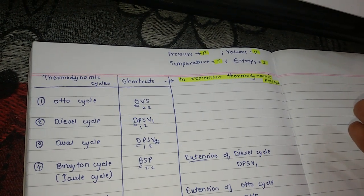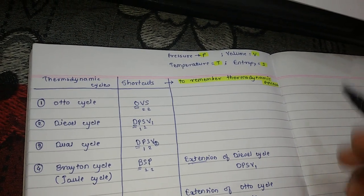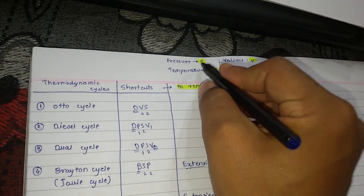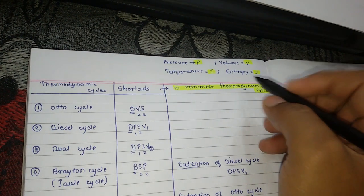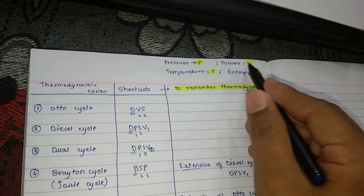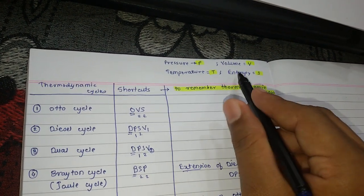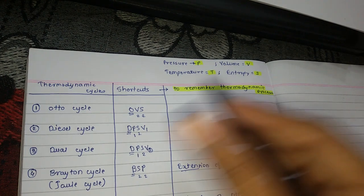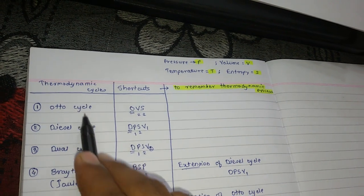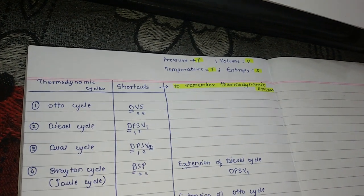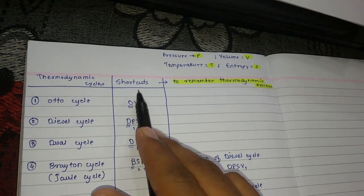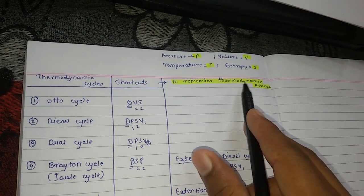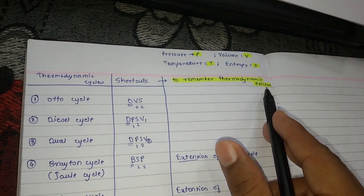I am going to use symbols: for pressure I am going to use P, for volume V, for temperature T, and entropy S. Here thermodynamic cycles are listed along with shortcuts to remember their thermodynamic processes.